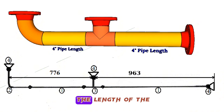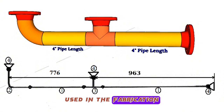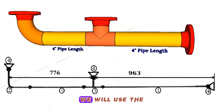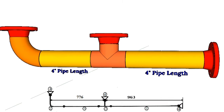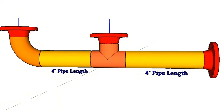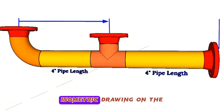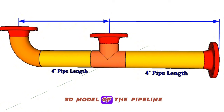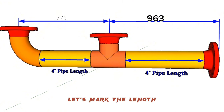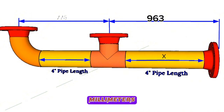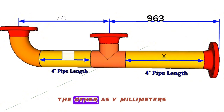We need to calculate the length of the 4-inch yellow colored pipe pieces used in the fabrication of this pipeline. We will use the 3D model of this pipeline to make the calculation easier to understand. Let's write the dimensions from the pipe isometric drawing onto the 3D model. Let's mark the length of one of the pipes as X millimeters and the other as Y millimeters.